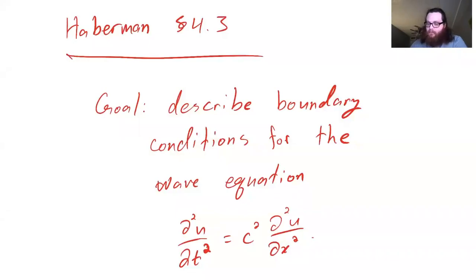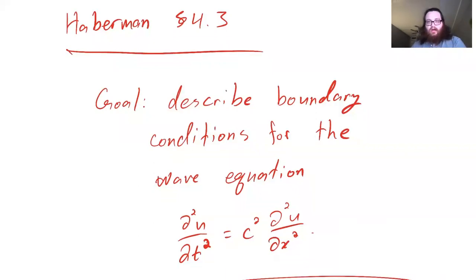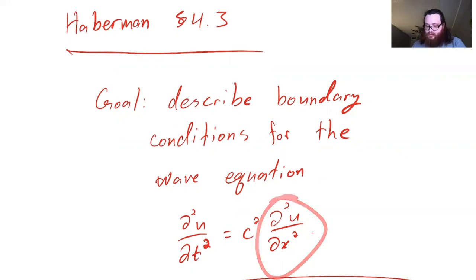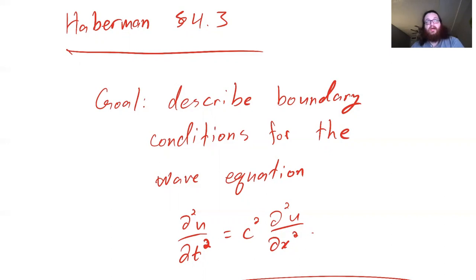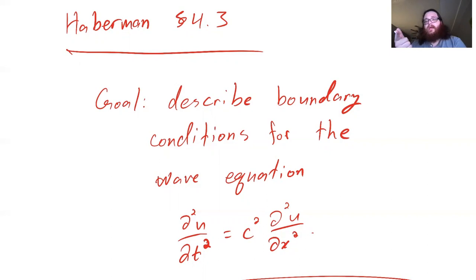Hello. So in this video, we'll be talking about Haberman's section 4.3. The goal of this section is to describe boundary conditions for the wave equation. We have two spatial derivatives and two time derivatives that appear. So to have a well-defined solution to the wave equation, we would expect to need to supply two pieces of information about what this function is doing at the boundary, as well as two pieces of information about what it's doing at time zero.